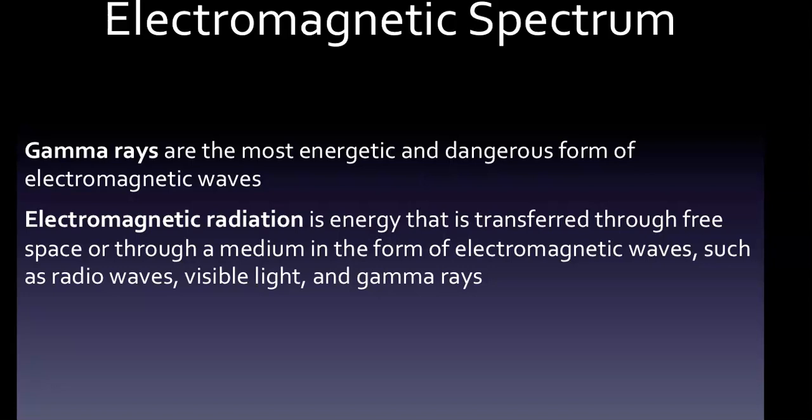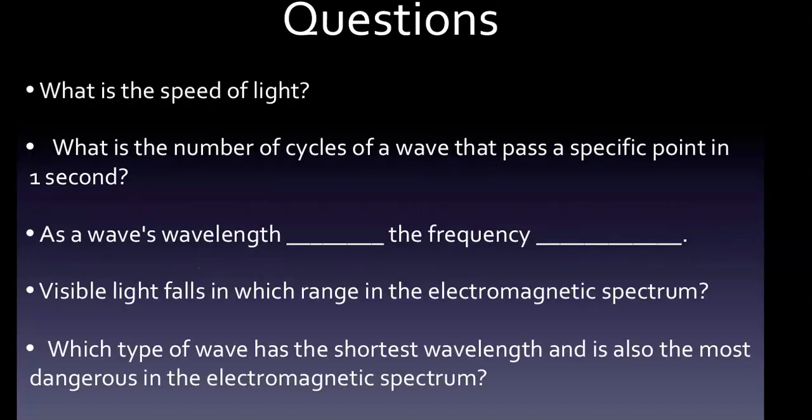Electromagnetic radiation is energy that is transferred through free space or through a medium in the form of electromagnetic waves. Examples could be radio waves, visible light, and gamma rays. And then finally, just a small point: a particle of electromagnetic radiation is known as a photon and sometimes called a light quantum. Okay, with that, we've covered everything you really need to know.